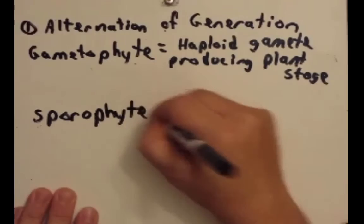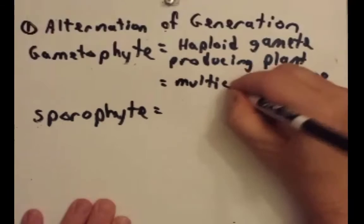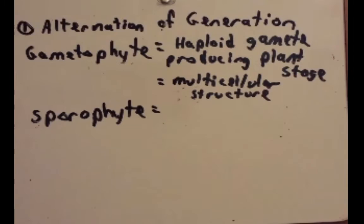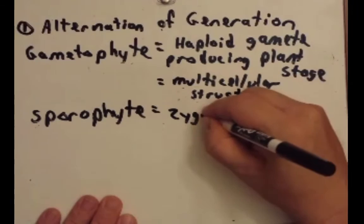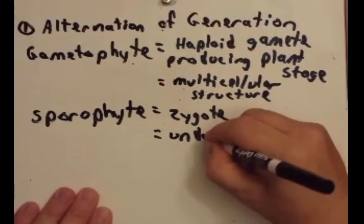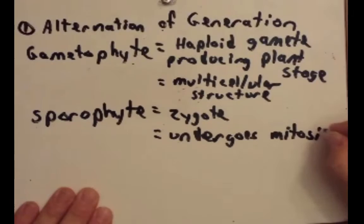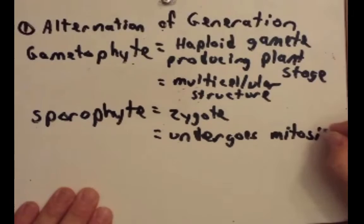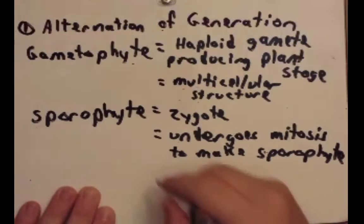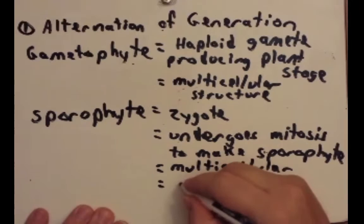I should also tell you that the gametophyte is a multi-cellular structure. This sporophyte is when two gametes come together and you form this zygote, and it undergoes mitosis to make the sporophyte. It is also multi-cellular. It will later on go on to generate spores. So this is the spore producing plant.